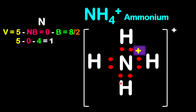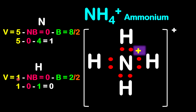Let's calculate the formal charges for the hydrogen atoms. They are the same, so let's calculate one. Hydrogen is from group 1, it has 1 valence electron. We have no non-bonding electrons, so they are 0. We have 2 bonding electrons for each, so 2 divided by 2. So it's going to be 1 minus 0 minus 1, which gives 0. So all the hydrogen atoms have 0 formal charge. The overall charge on the molecule is positive 1.